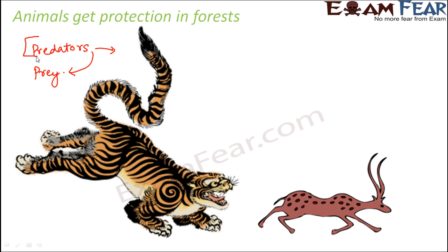Predators and prey will always exist. In this case, the tiger is the predator and the deer is the prey. But in a forest, there are certain advantages for the deer as well — the deer mainly feeds on plant parts, and since there is an abundance of plants in the forest, there is plenty of food for the deer.